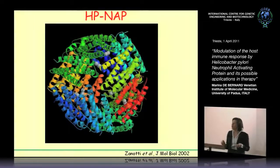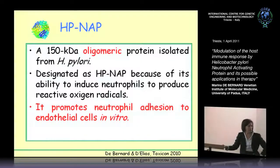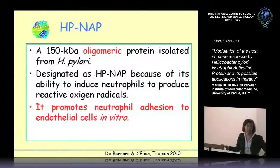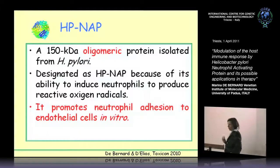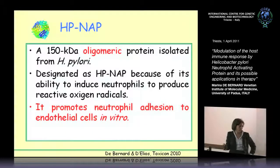H. pNAP is a dodecameric protein of 150 kDa and it is called H. pNAP, which means Helicobacter pylori neutrophil activating protein, because of its ability to induce neutrophils to produce reactive oxygen radicals. It has been demonstrated before our study that it promotes neutrophil adhesion to endothelial cells in vitro, but this study did not consider the underflow condition, which is extremely important in vivo.